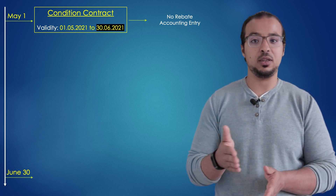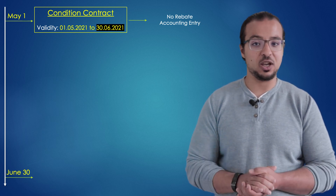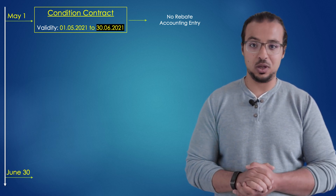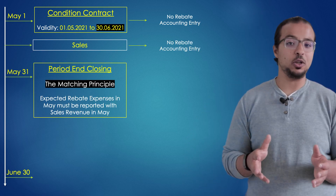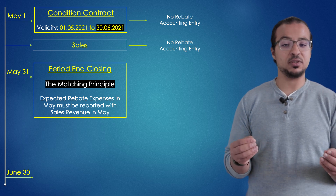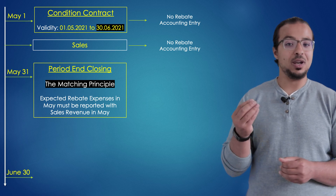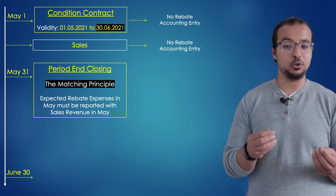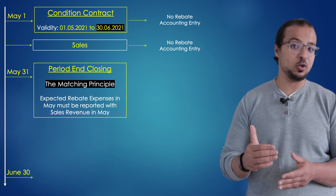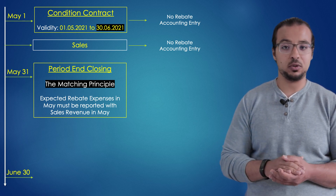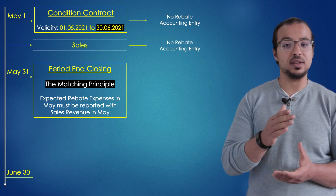We start the process today by creating the condition contract with no financial entries. Then we process the different sales transactions, also with no financial entries related to rebate. Then we get to 30 May and we have to process the period-end closing. According to the matching principle, any revenues and expenses related to each other must be reported in the same accounting period. So the rebate expenses related to the sales revenues reported in May must also be reported in May, even though we still don't know if the customer will achieve the target or get the discount. But still, we have to report a part of the expected rebate expense in May with the sales revenue.